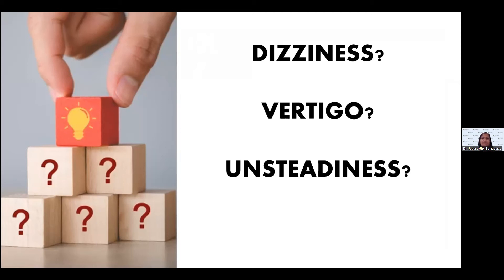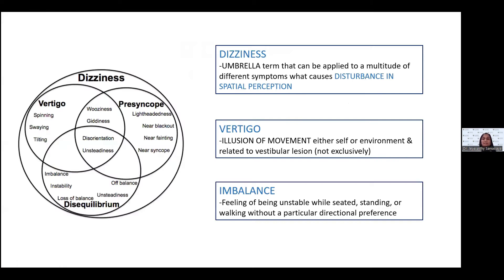When you say dizziness, vertigo, and unsteadiness, you've likely heard different terms. Dizziness is an umbrella term applied to a multitude of different symptoms that cause disturbance in spatial perception. Vertigo is the illusion of movement of either self or environment, and it's related to a vestibular lesion. Balance, on the other hand, is a feeling of being unstable while seated, standing, or walking without a particular directional preference. Dizziness includes sensations sometimes referred to as giddiness, lightheadedness, or nonspecific dizziness.